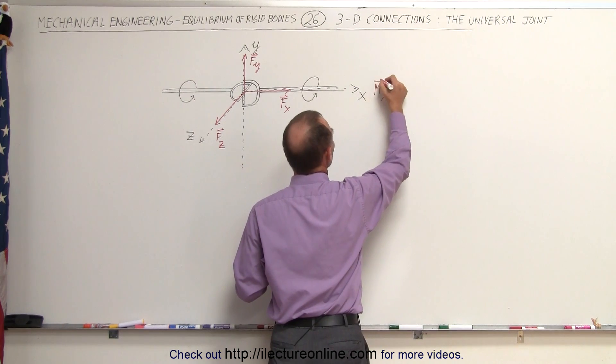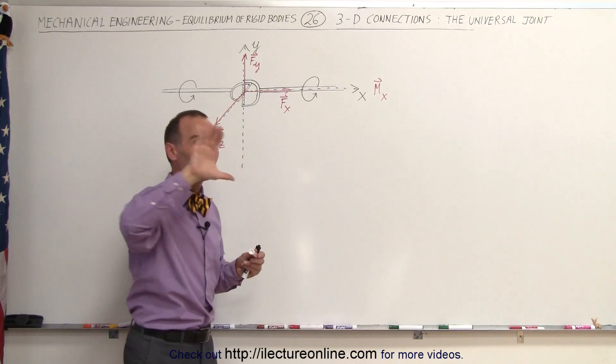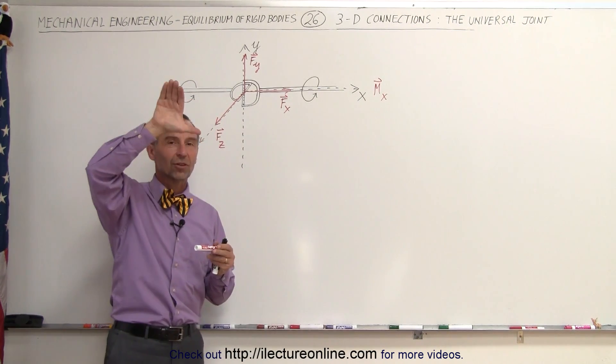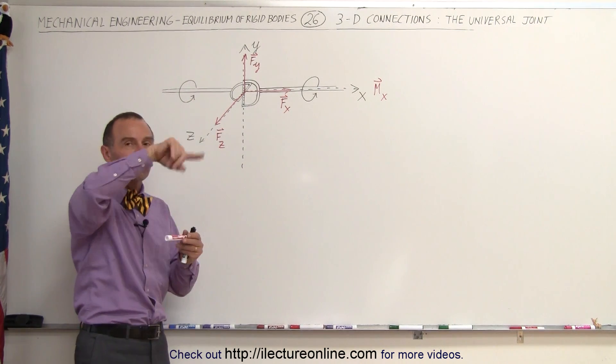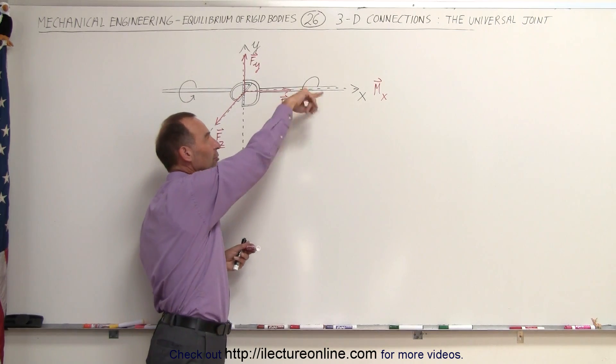So that's a moment in the x direction. You can see there that if you put your thumb in the direction of the axis, you can see your fingers rotate in the direction of the moment. So any rotational motion here gets transferred to the rotational motion there.